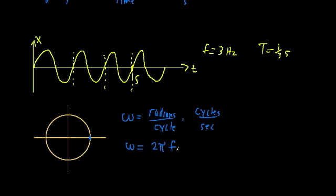Since frequency is defined as 1 over the period, this also means that the angular frequency can be defined as 2π divided by the period.